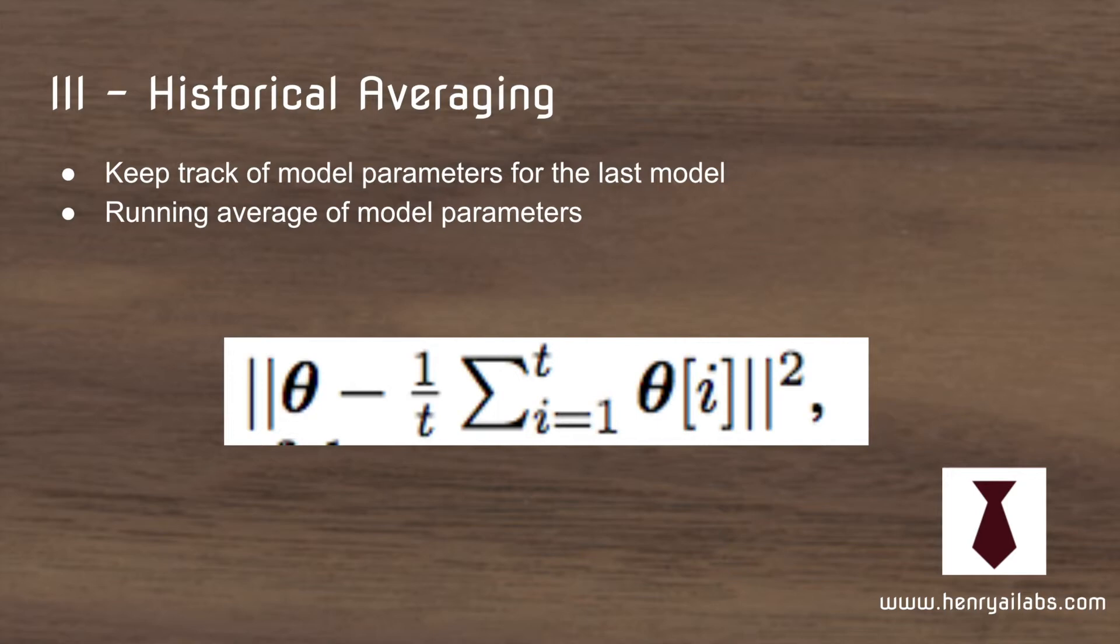The third idea is to avoid the failure mode where the discriminator sends some kind of odd signal back to the generator and then it causes an odd spike in the parameters, and next thing you know it's unstable and going to fail. The idea here is that you add this additional term to the cost function so that the next set of parameters don't deviate too much from the historical set of parameters.